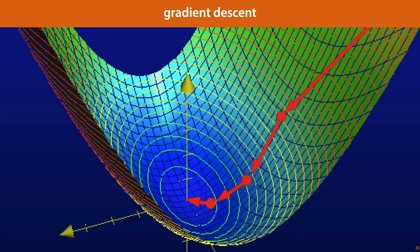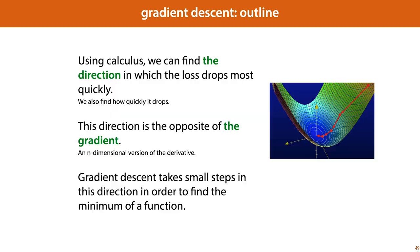Explaining gradient descent precisely and setting up all the required preliminaries is going to be a little bit complex, so we'll start with an outline of the whole story. These are the three main steps of defining gradient descent: we can use the principle of calculus to find the direction in which the loss drops most quickly, and this direction is the opposite of something called the gradient. The gradient is an n-dimensional version of the derivative, and the gradient descent algorithm then simply proceeds by taking small steps in this direction in order to find the minimum of a function.